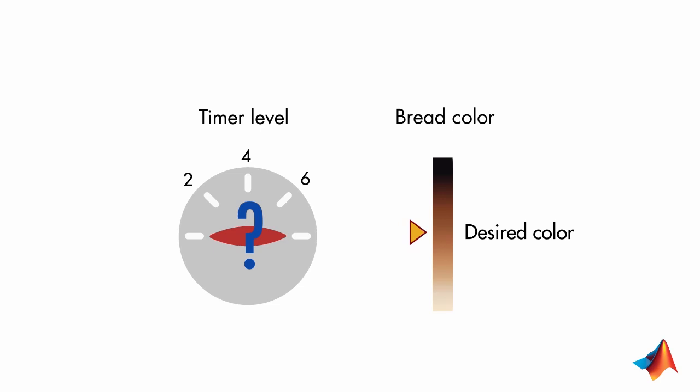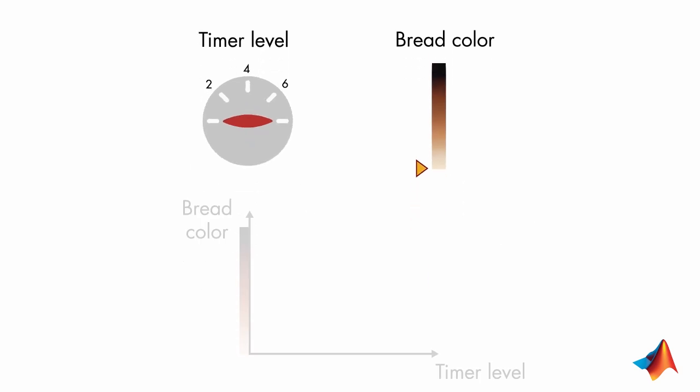In this case, you can do a couple of experiments. You can input different timer settings and wait until your output settles to a value, then mark your findings on this plot.